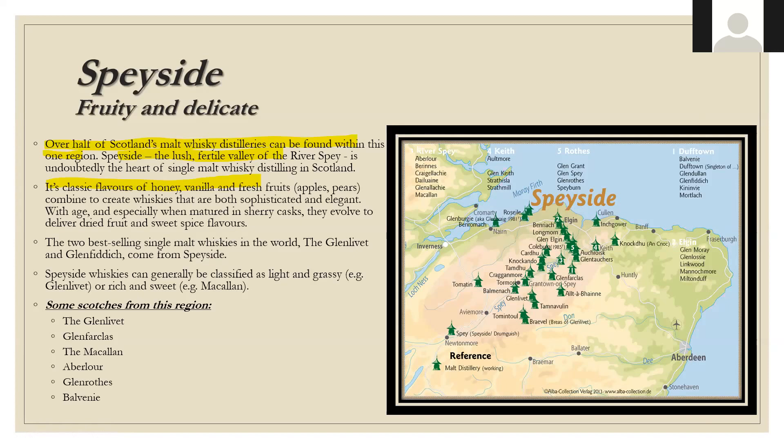Speyside whiskeys can generally be classified as light and grassy or rich and sweet. Notable producers include The Macallan, The Glenlivet, Glen Farclass, Aberlour, Glenrothes, and Balvenie, which is famous for their different barrel finishes.